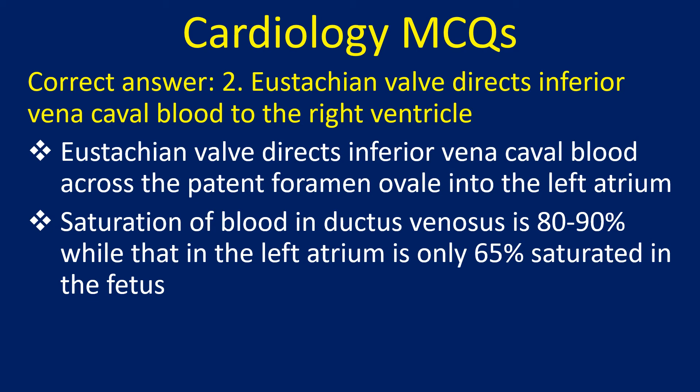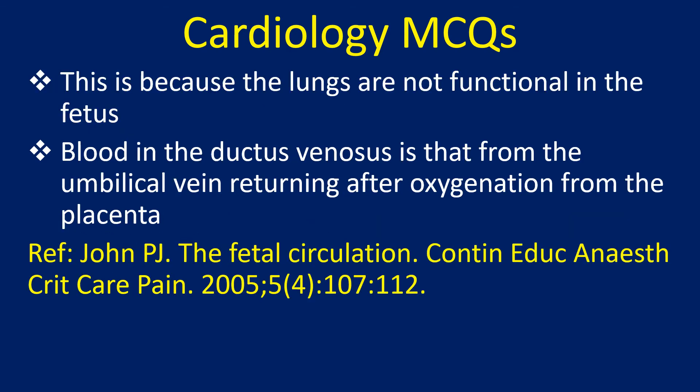Saturation of blood in the ductus venosus is 80–90%, while that in the left atrium is only 65% saturated in the fetus. This is because the lungs are not functional in the fetus. Blood in the ductus venosus is that from the umbilical vein returning after oxygenation from the placenta.